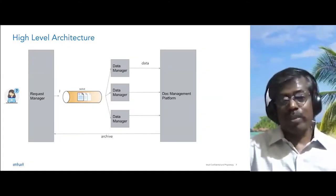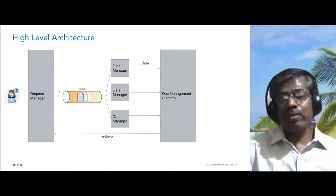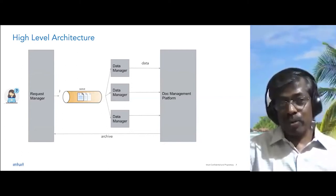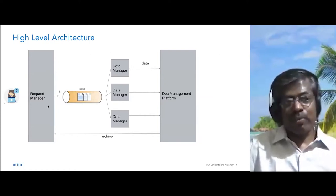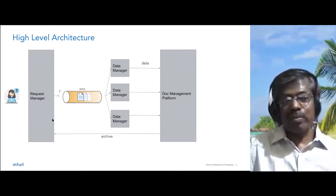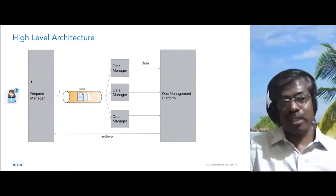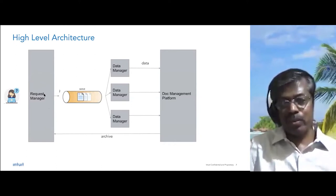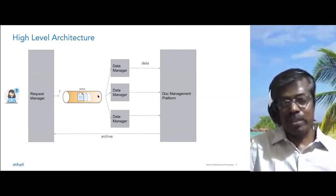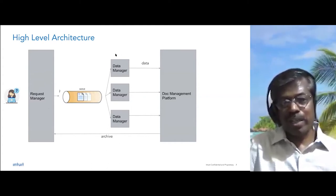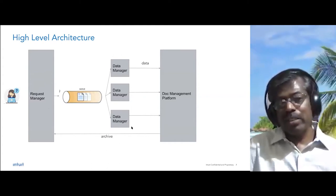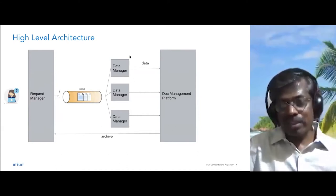This diagram shows a very high-level architecture of the approach we've used for solving this problem. There are four components in this flow. The first is the request manager, which manages requests from customers to perform either access or delete operations. When the manager receives a request, it publishes the information to a queue or a topic. The third component is the data manager — there are multiple data managers employed.